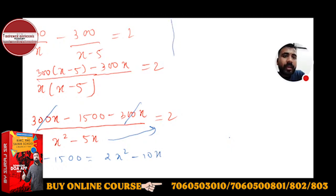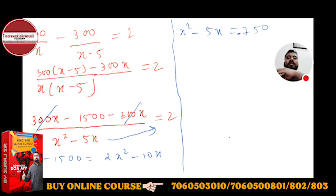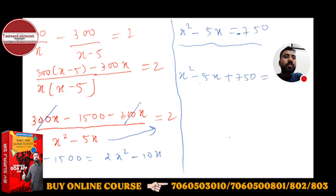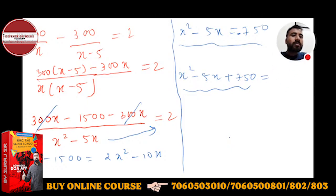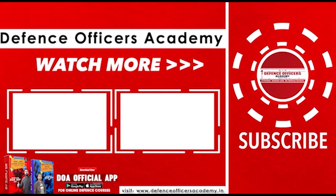Dividing the whole equation by 2: x squared minus 5x equals minus 750, which gives x squared minus 5x plus 750 equals 0. This is a quadratic equation and you will get two values of x. Based on the options, you can identify the correct answer. You can solve this equation now.